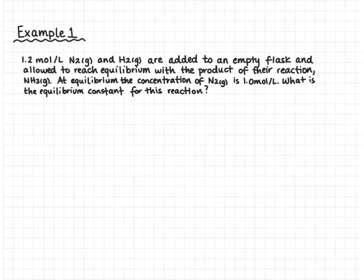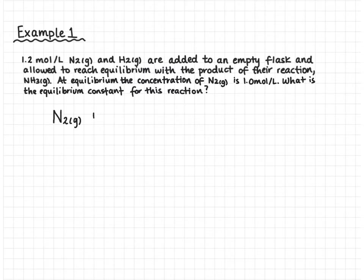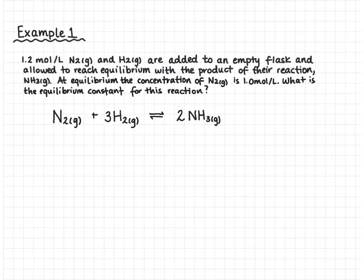Our first example: 1.2 moles per liter of nitrogen and hydrogen gas are added to an empty flask and allowed to reach equilibrium with the product of their reaction, NH3. At equilibrium, the concentration of nitrogen is 1.0 mole per liter. What is the equilibrium constant for this reaction? We start by writing our reaction: N2 + 3H2 ⇌ 2NH3. We need two NH3 to balance the nitrogens, and three H2 to balance the hydrogens. Then we write ICE down the side — balanced reaction and ICE is the first step in every problem.